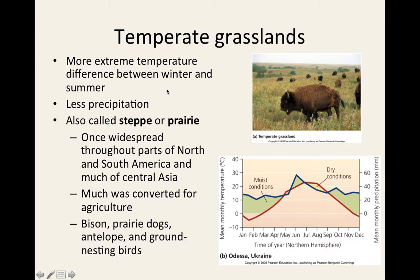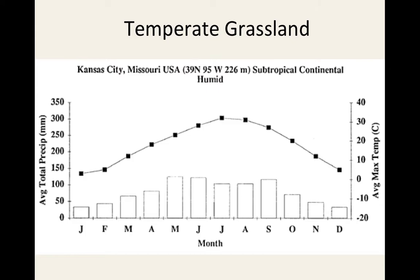Temperate grasslands experience more extreme temperatures due to cool, arid conditions. They have less precipitation, peaking for only one to two months. These are your prairies of North America, much of which has been converted for agriculture. Animal life includes bison, prairie dogs, antelopes, and birds that nest in the grasses.